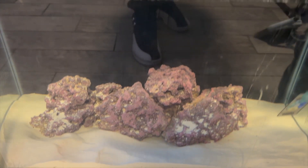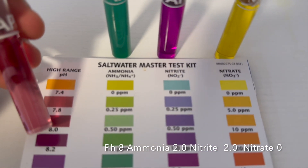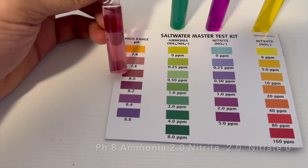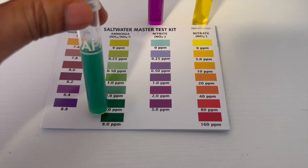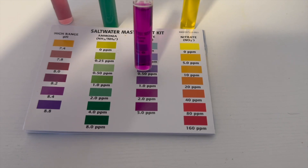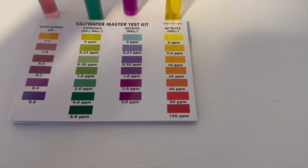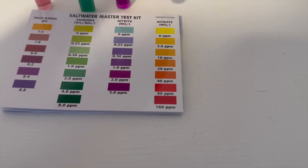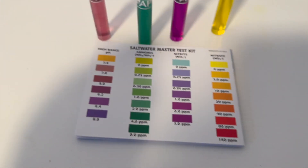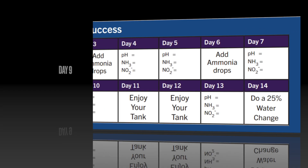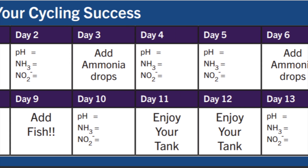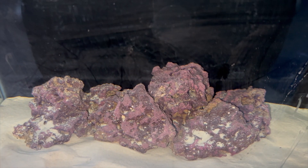Day 8 of the Dr. Tim process. pH level at 8.0, ammonia at 2.0, nitrate at 2.0, and nitrite at zero — no production of nitrite. No progression. I was supposed to add fish, but I'm just waiting until the cycle is done.